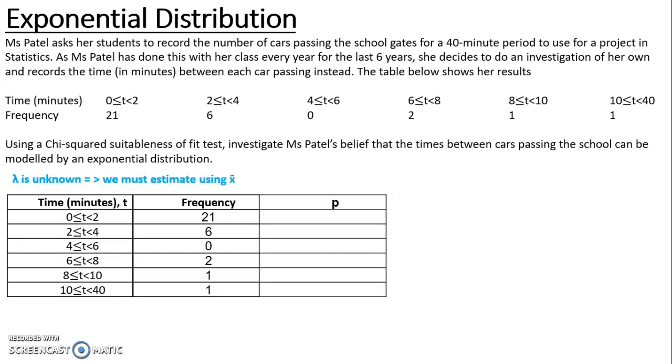If lambda is unknown, I can estimate using x-bar, the sample mean. So I can work out from this data by using the midpoints of the times and the frequencies that x-bar is 2.80645. We should know that the mean of an exponential distribution is 1 over lambda. So x-bar, the sample mean, is approximately 1 over lambda.